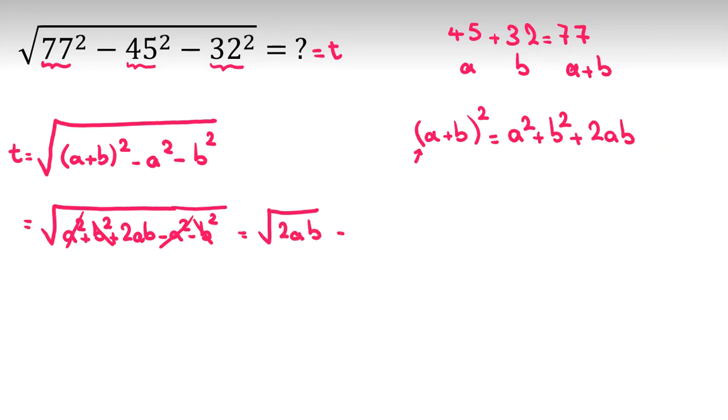Now A is 45, so let's write 2 times 45 times B, which is 32. So let's write like this, the first one is 2, 45 is 9 times 5. The next one, 32, will be 16 times 2, or 2 to the 5.